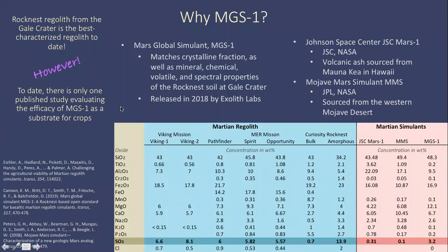Why do we want to look at Mars Global Simulant 1? Other Martian simulants are available, such as JSC Mars 1 and Mojave Mars Simulant. Both are sourced from natural environments and have been widely studied in literature. Mars Global Simulant 1 is a recipe created by Exolith Labs to mimic the mineral, chemical, volatile, and spectral properties of the Rocknest regolith at Gale Crater, which is the best characterized regolith to date.